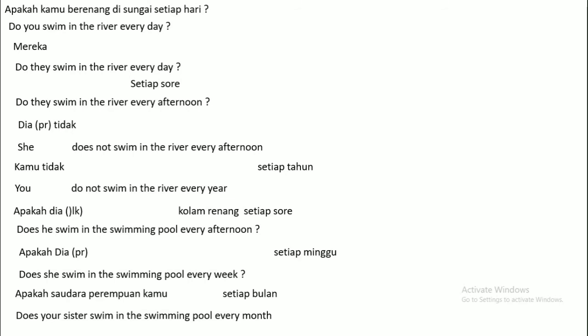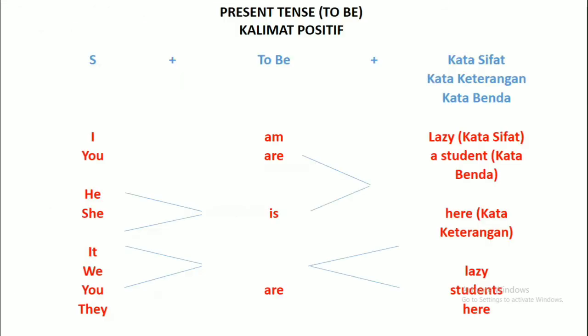Seperti itu ya, cara melatih percakapan dengan present tense tadi ya. Berikut kita ke present tense to be. Kalimat positif, jadi subject plus to be plus kata sifat, kata keterangan, kata benda. Kalau to be bentuk present seperti ini ya, contoh: I am lazy — saya malas.